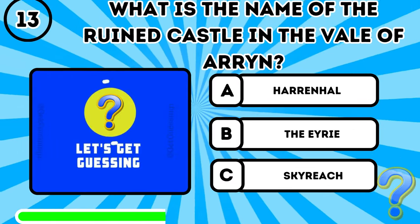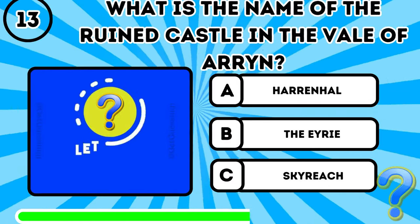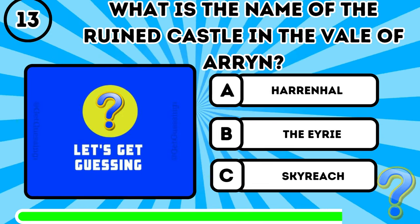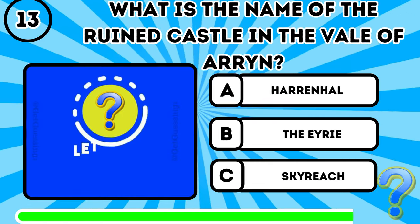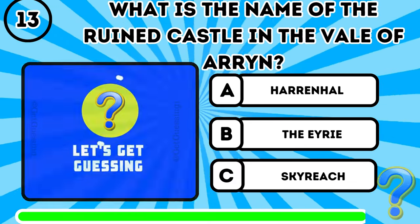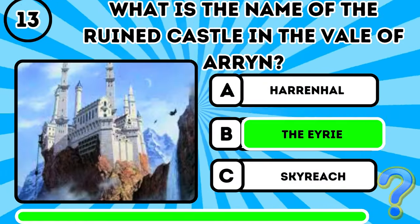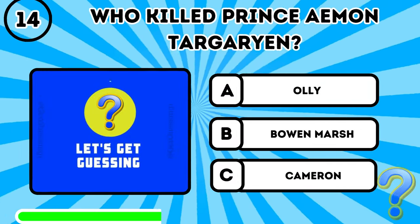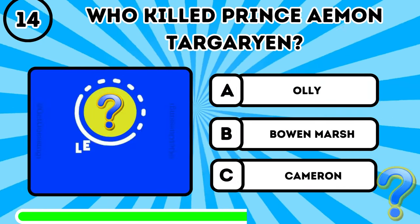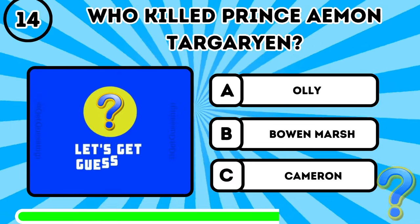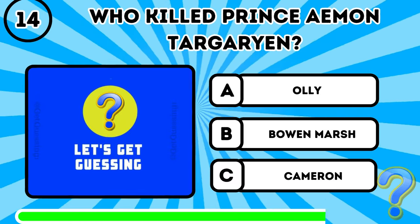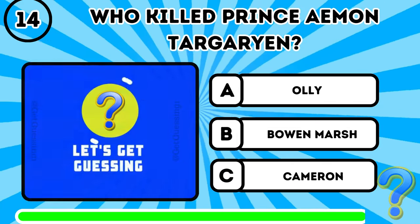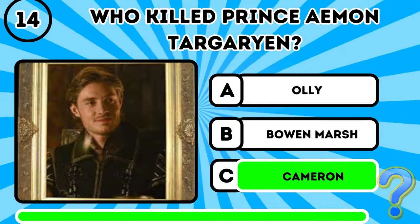Question 13: What is the name of the ruined castle in the Vale of Arryn? It's B, the Eyrie. Question 14: Who killed Prince Aemon Targaryen? It's C, Cameron.